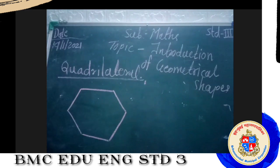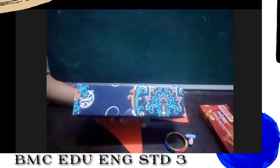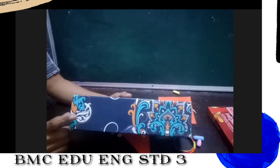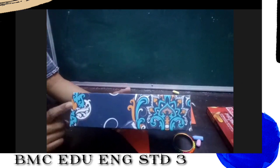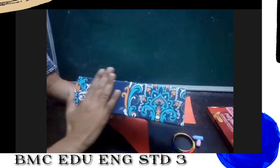Now once again we will understand about edges. Observe this — this is a box. What is the shape of this box? This is a rectangle-shaped box. In this box you can see different surfaces. This one is the first surface, this one is the second surface, this one is the third, and this one is the fourth.